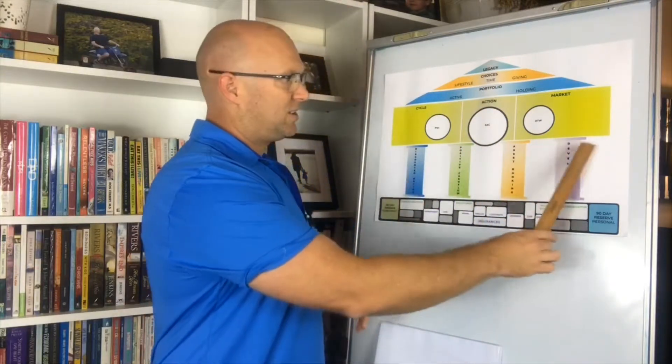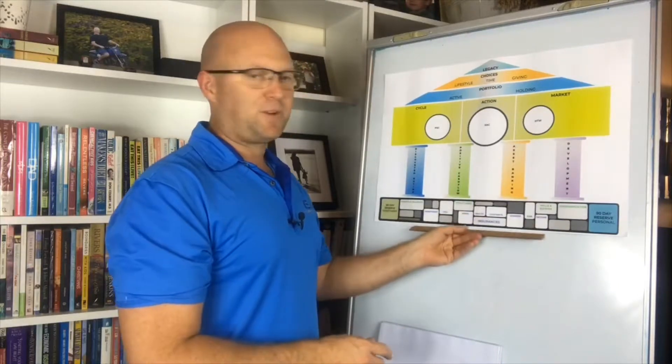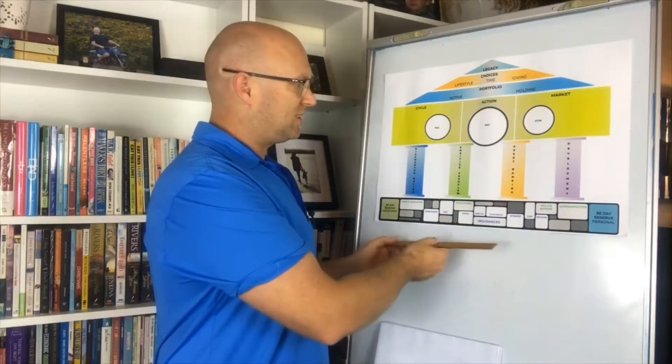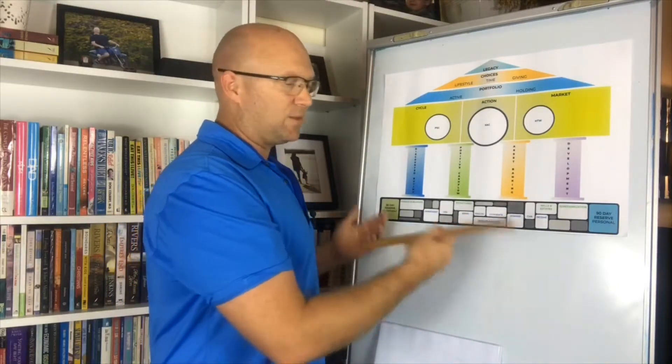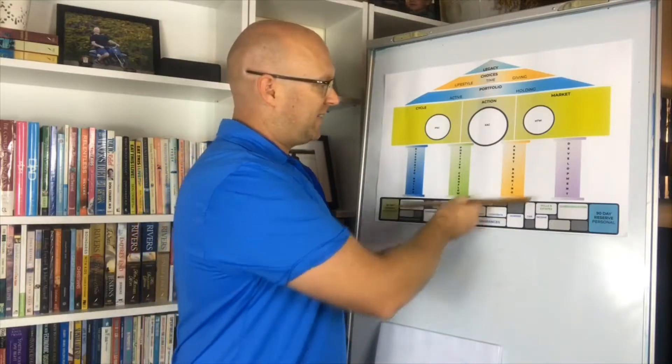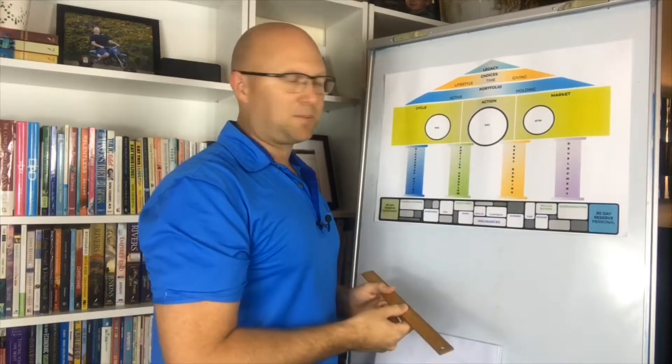And so there's the four pillars there. And they sit on top of your fundamentals, which is all your insurances and your planning and your wills and your reserves and that sort of thing. And that's where your pillars sit on top of them.